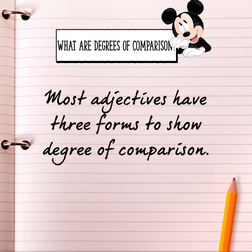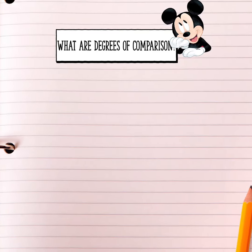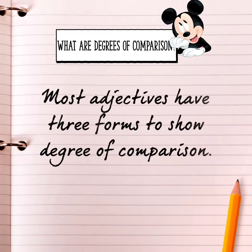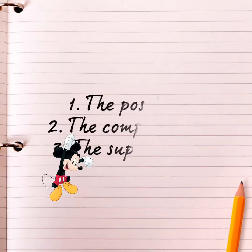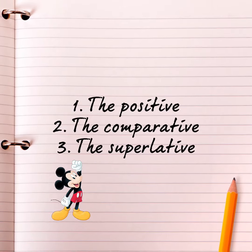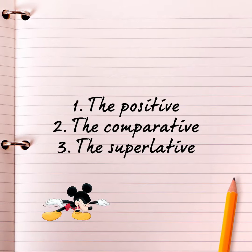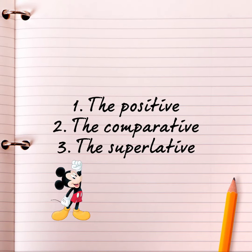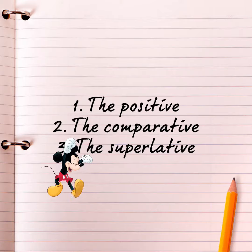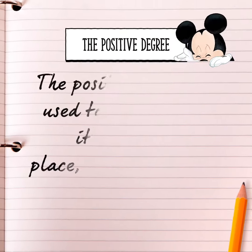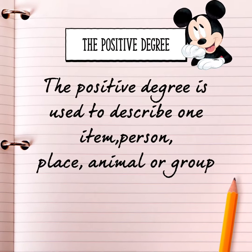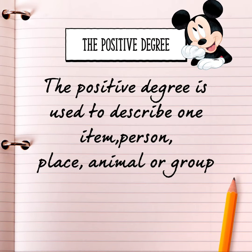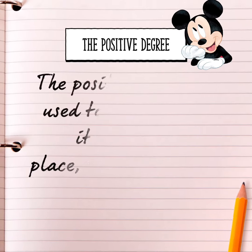Most adjectives have three forms to show degrees of comparison. They are the positive, the comparative and the superlative.